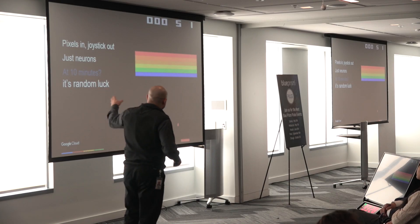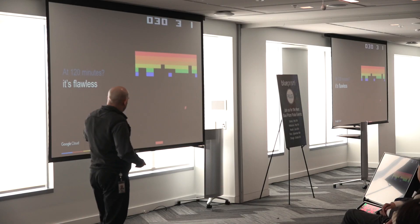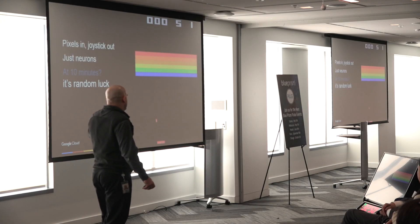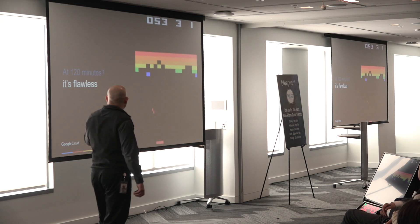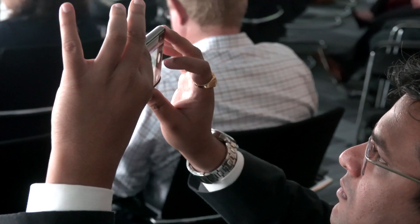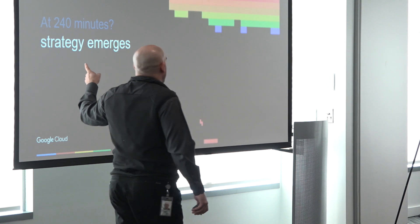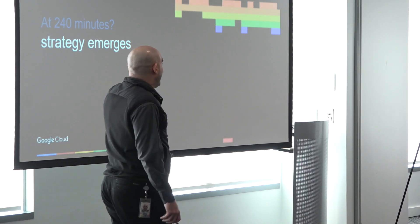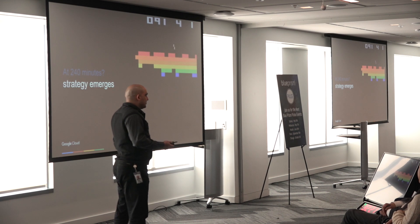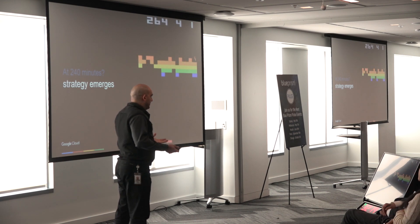Let's talk about an example: the Atari game. The first version was doing random things — just moving around and occasionally hitting the target. As the machine plays, it starts noticing that if it moves the bar right under the dot, it does really well. After 120 minutes it can already outperform most humans, and after 240 minutes it comes up with a pretty good strategy. This type of machine learning solution is called reinforcement learning.